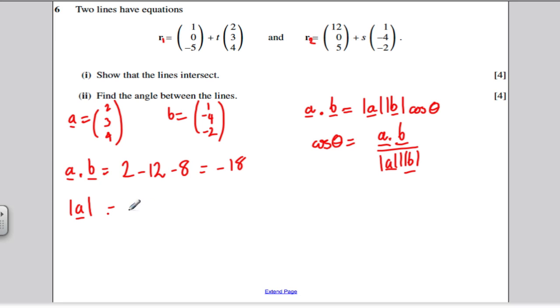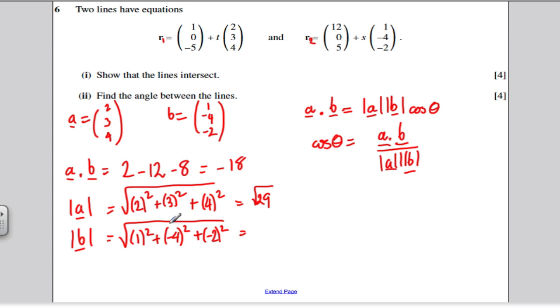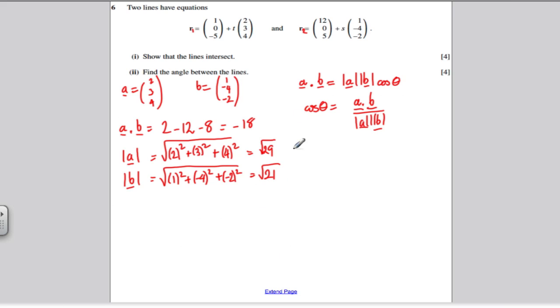Done the A dot B bit. What is the modulus of A? Well, it's the square root of 2 squared plus 3 squared plus 4 squared, which is 4 plus 9 is 13 plus 16, which is 29. So it's the square root of 29. And what's the modulus of B or the magnitude of B? Well, it's the square root of the squares of each of the components. So it's the square of 1 plus the square of minus 4 plus the square of minus 2. This is 1 plus 16 is 17 plus 4 is 21. So it's the square root of 21.